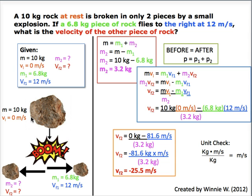Given in the box and shown in the diagram, the original mass is 10 kilograms and its initial velocity is 0 meters per second. After the explosion, the mass of the first rock is 6.8 kilograms and its final velocity is 12 meters per second. What is the mass of the second rock and its final velocity?